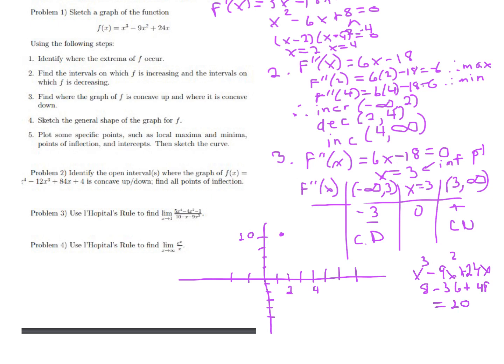At x = 4: 4³ is 64, minus 9 times 16 is 144, plus 24 times 4 is 96. So 64 − 144 + 96 = 16. We have a minimum point at (4, 16).